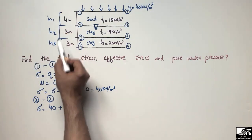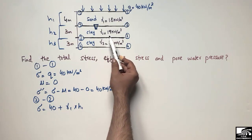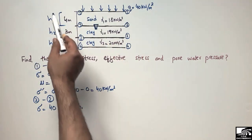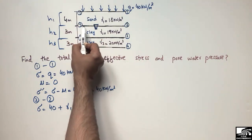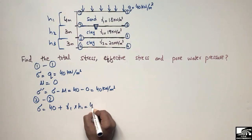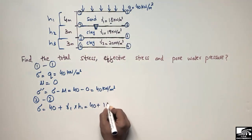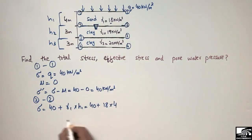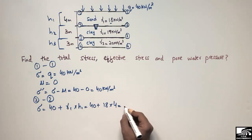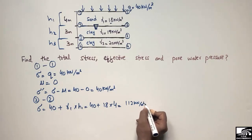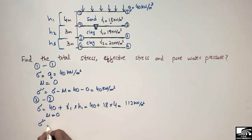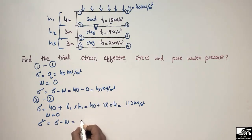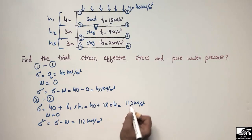We have three different thicknesses h1, h2, h3 and three different unit weights, so we multiply each unit weight by its layer thickness. Total stress at 2-2: 40 + gamma 1 × h1 = 40 + 18 × 4 = 112 kN/m². Pore water pressure is zero because the water table is below point 2-2, so the effective stress equals the total stress: 112 kN/m².